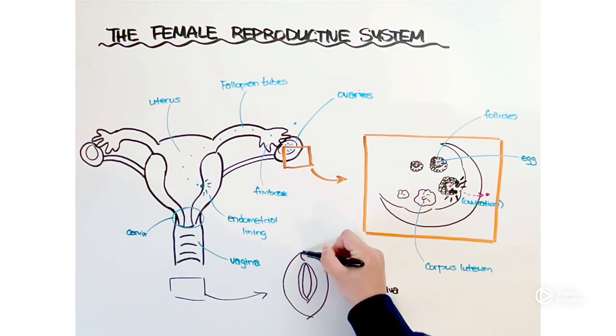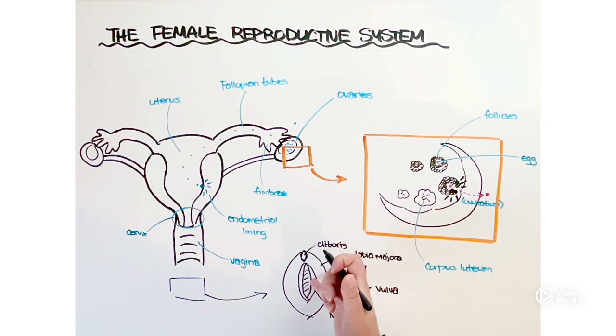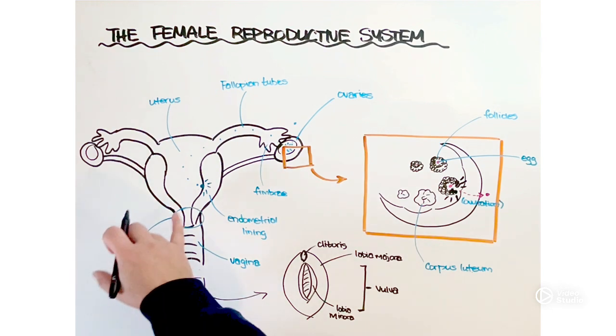There's a band of tissue kind of towards the top of the vulva known as the clitoris, which contains really sensitive bundles of nerve fibers. We have the labia majora and the labia minora, which are essentially just folds around the vaginal canal here.